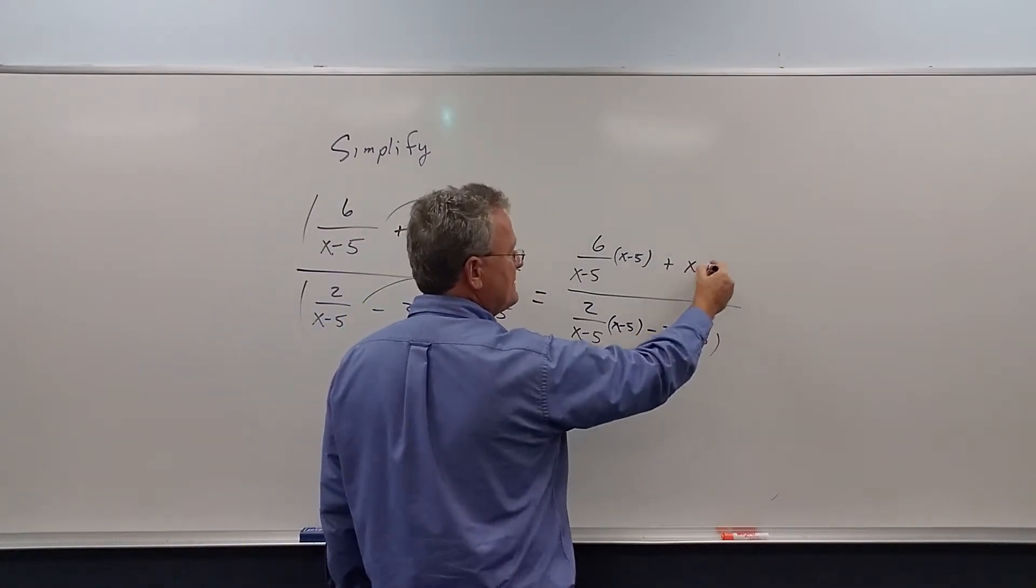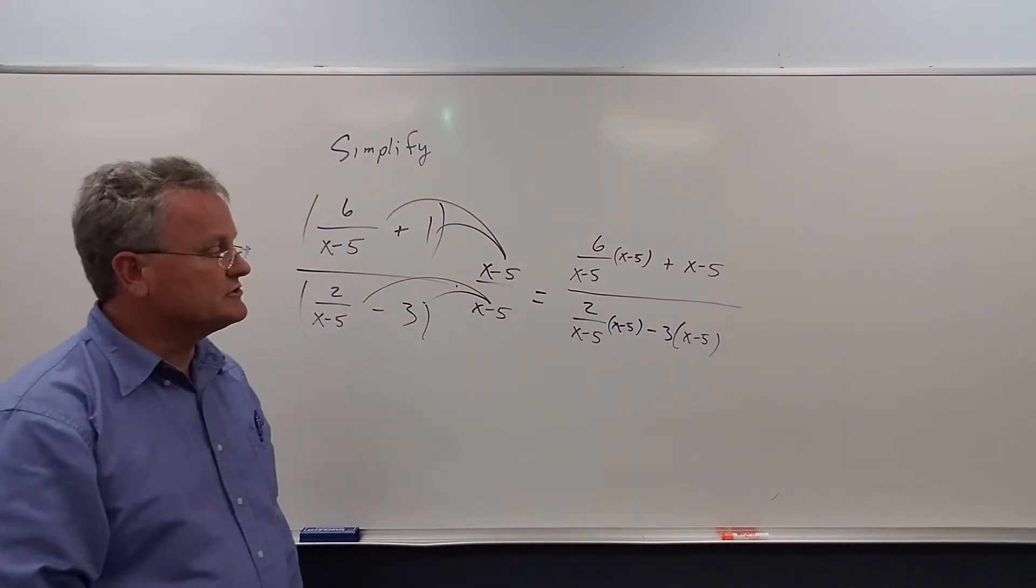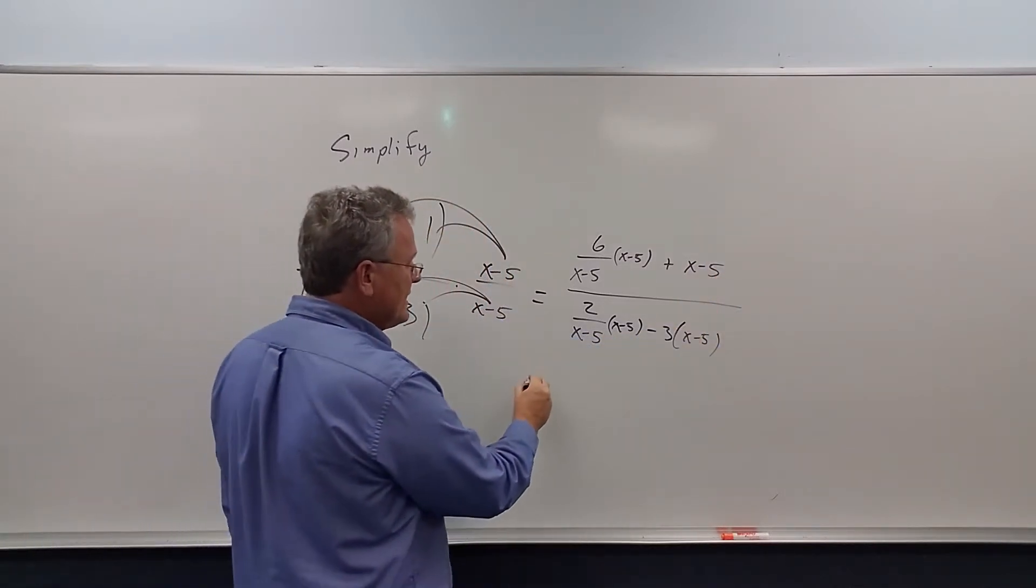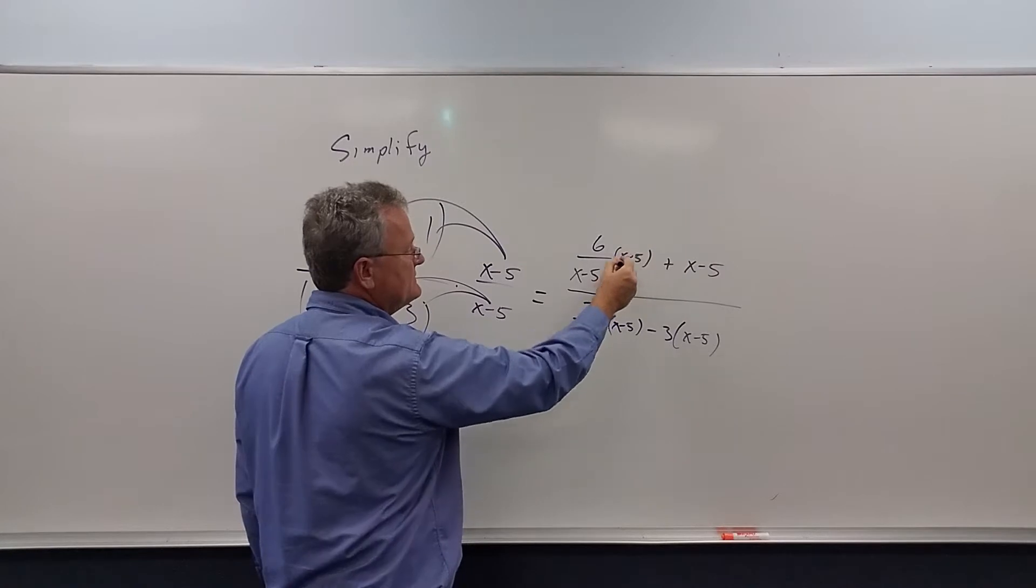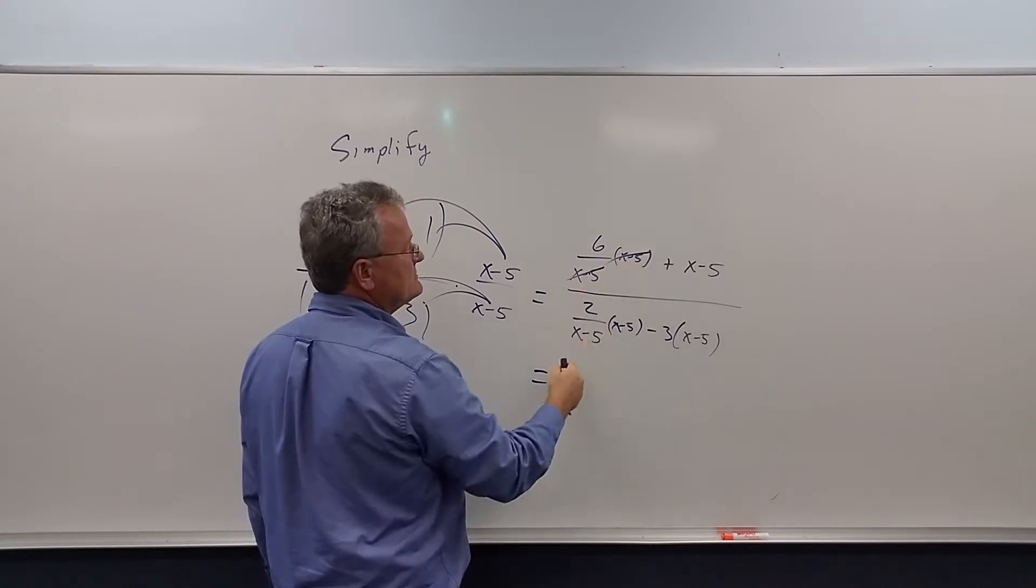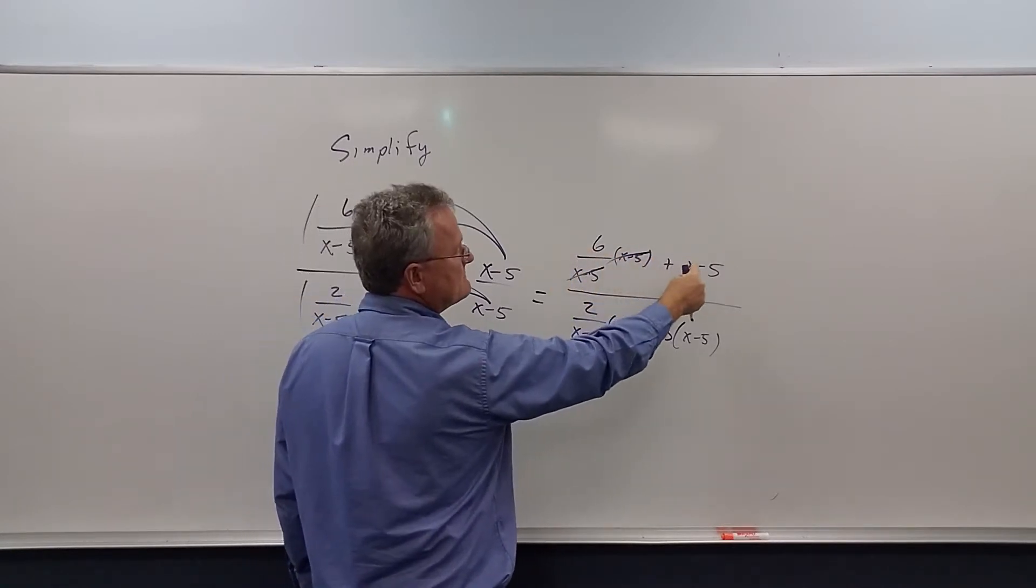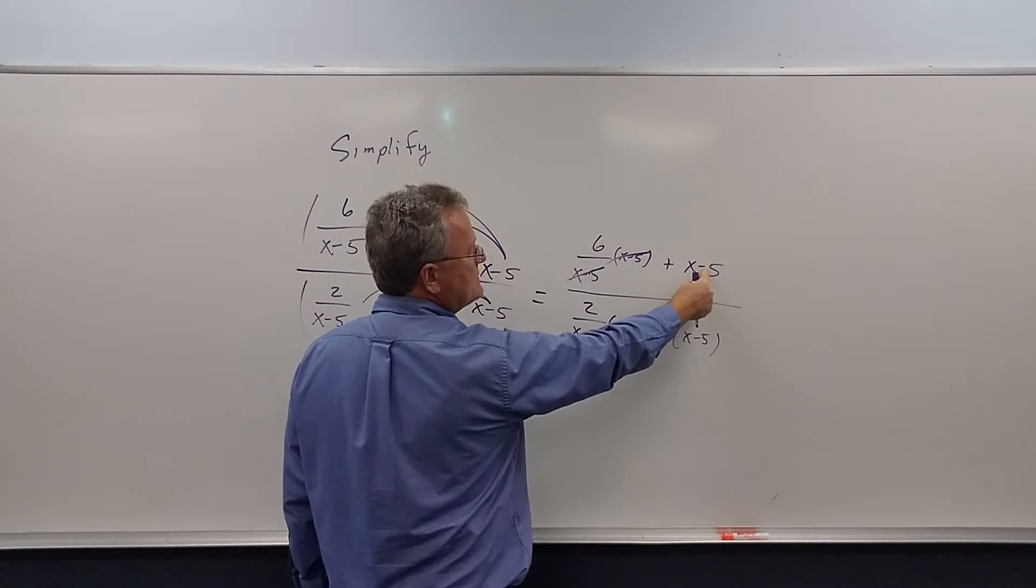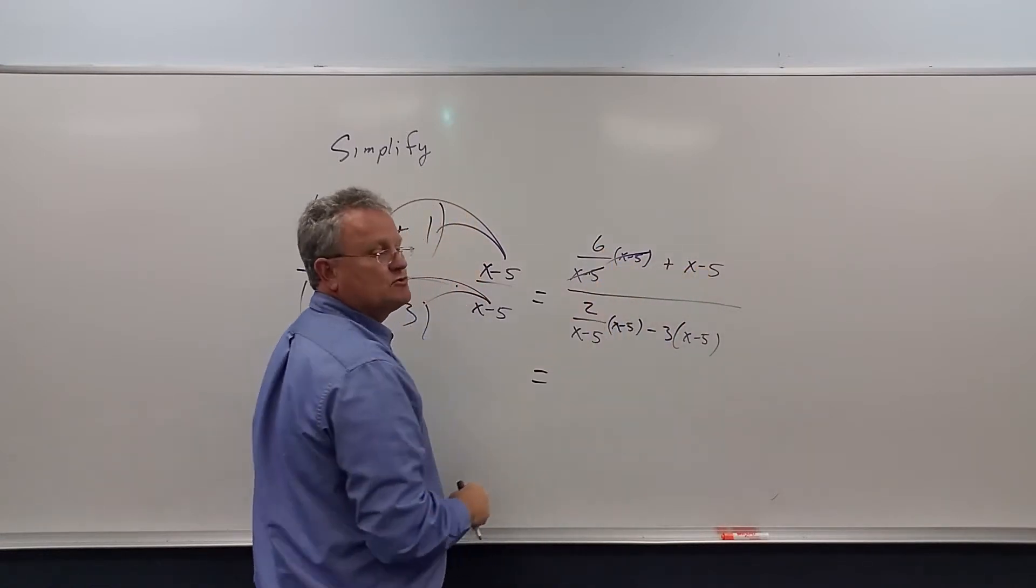Now up here, if you wanted parentheses there you could, but there's no need. So what do we get when we simplify these? The x minus 5s cancel. We get 6 minus 5 is 1, so we get x plus 1, or 1 plus x—same thing.